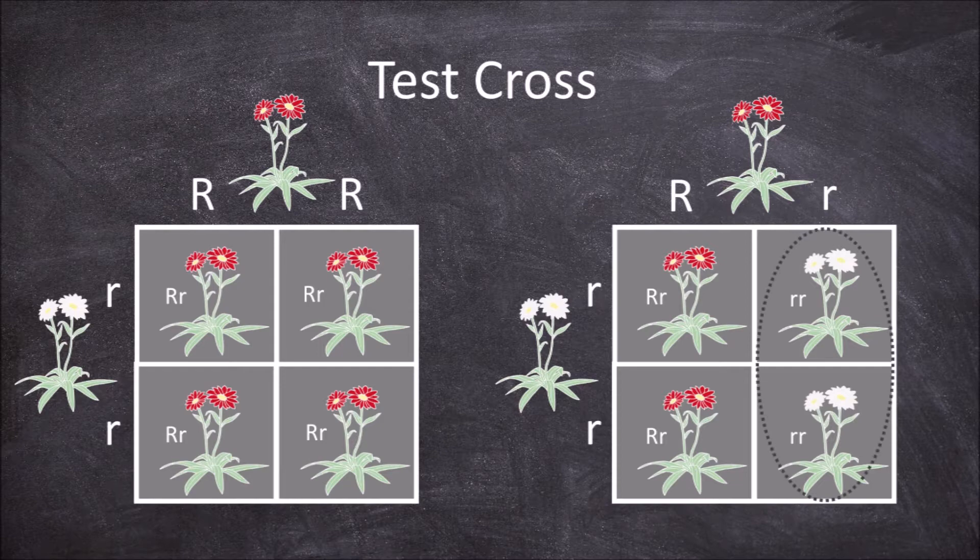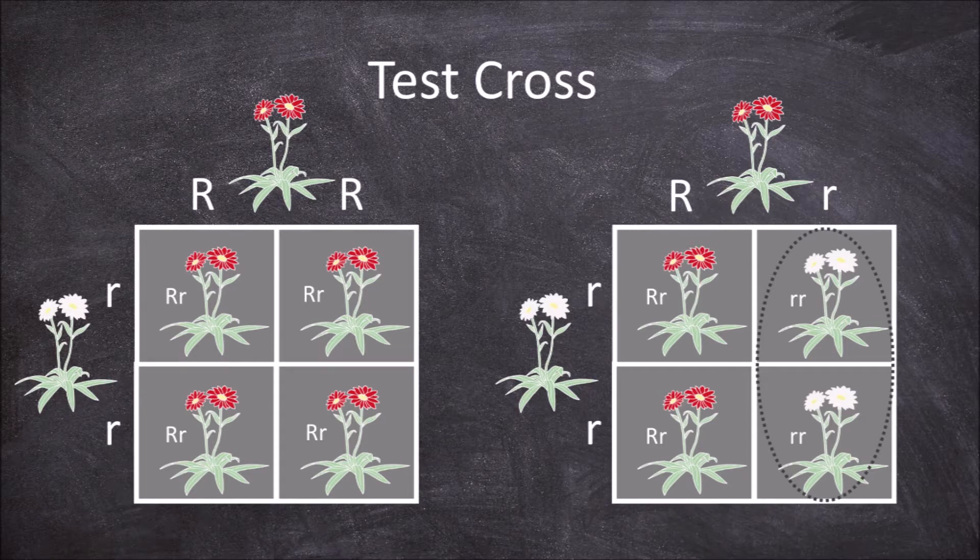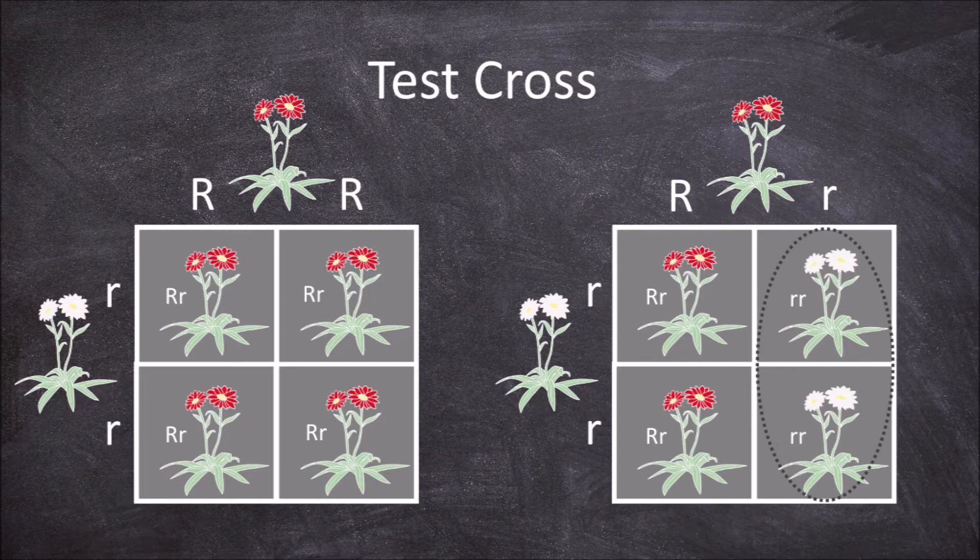The presence of offspring in a test cross would determine whether the parent was homozygous dominant or heterozygous by the presence or lack of offspring with white flowers.